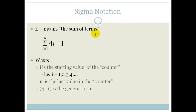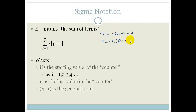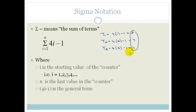What this really means is that if we were looking for term 1, we'd go: term 1 is 4 times i, but i starts at 1, so it's 4 times 1 minus 1, which is 3. Then term 2: the count moves to 2, so 4 times 2 minus 1 is 7. Then T3 is 4 times 3 minus 1, which is 11. Those are your first three terms of the series.